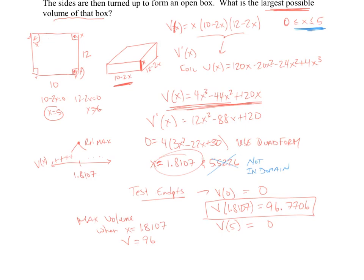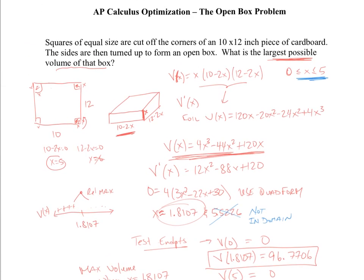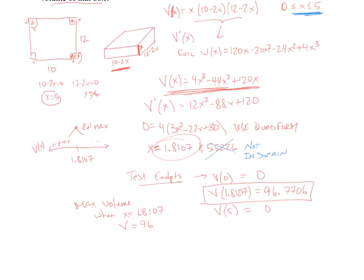So this gives me my maximum volume when I make x 1.8107 for a volume that's equal to 96.7706 cubic inches. And did I specify that these are inches? Let's look up here real quick. Did I specify those are inches? Yes, I did. So this is in inches. And this is 96.7706 cubic inches.